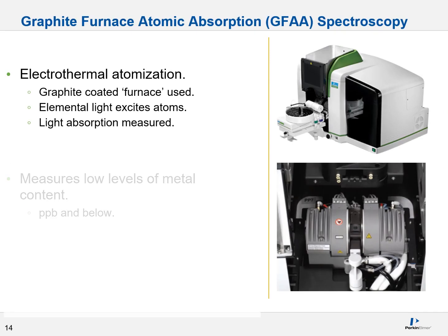Graphite furnace atomic absorption spectroscopy, or GFAA, is the brother to flame atomic absorption spectroscopy. This instrument relies upon electrothermal atomization. Instead of using a flame, it uses high voltages to generate a tremendous amount of heat and effectively atomize your sample. This is done in a graphite-coated furnace. Once your atoms are generated, elemental light is used to excite them, light absorption is measured, and back-calculated to determine the concentration of your metal. This technique measures low levels of metal content — parts per billion (ppb) and below — and relies upon extremely low sample volumes, in the microliter range.